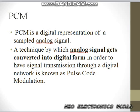Pulse code modulation is a digital representation of a sampled analog signal. We are modulating an analog signal for transmitting that signal through a digital network, and the transmission is done in digital form. The technique by which the analog signal gets converted into digital form in order to have signal transmission through a digital network is known as pulse code modulation. This is the definition of pulse code modulation.